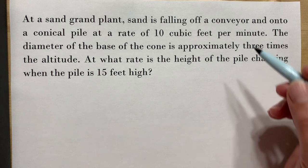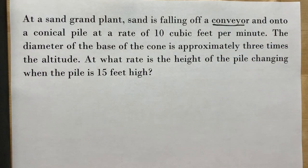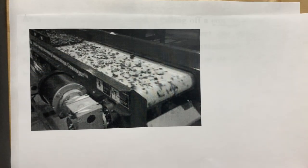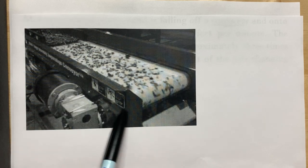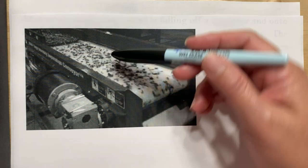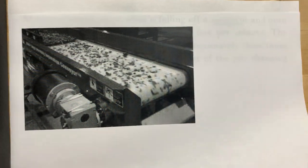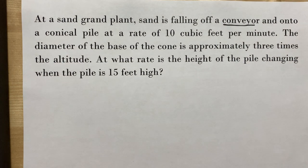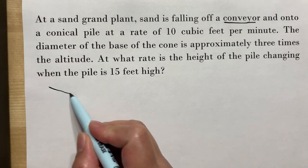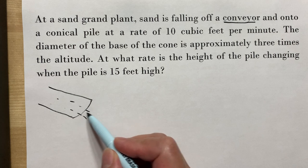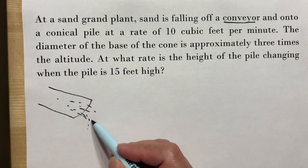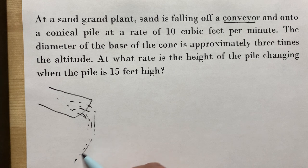First, let's discuss what a conveyor is. The conveyor is used in a manufacturing company — all the products are moving along it and then drop off. Imagine that for our sand: the conveyor is dropping the sand, and while the sand drops, it piles into a conical shape.